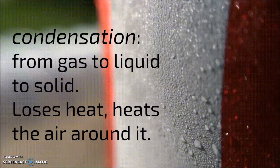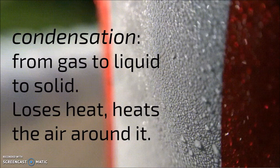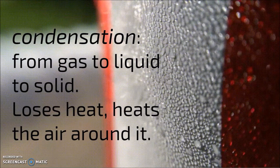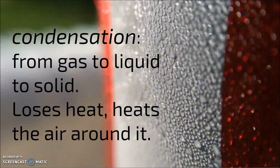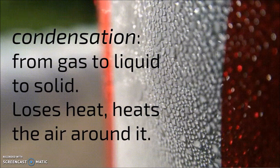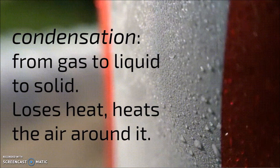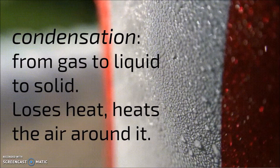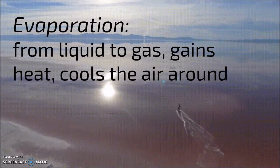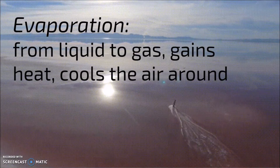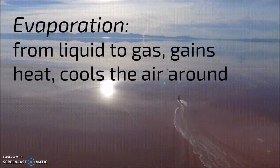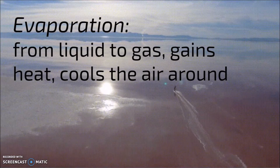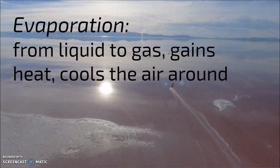When water changes from one form to another, it's called condensation — when water changes from gas to liquid to solid, when water vapor condenses to liquid and then to ice. Because of this, it's going to lose its heat to get colder, and that heat is going to stay in the air around it. The opposite is called evaporation — when liquid turns to gas, or ice melts and turns to liquid. This is when it gains heat, cooling the air around it.